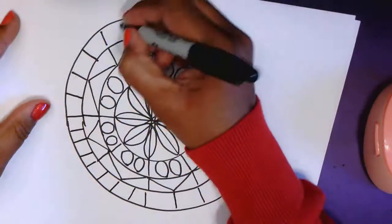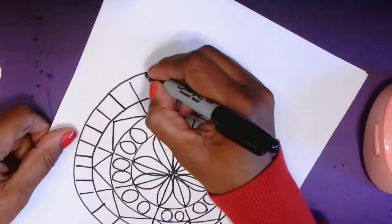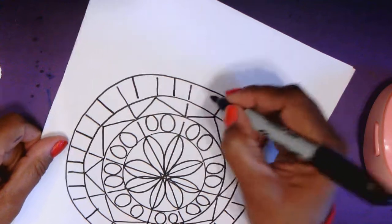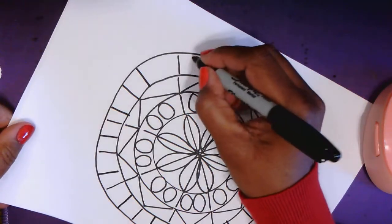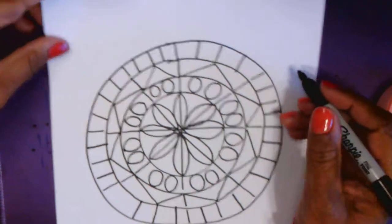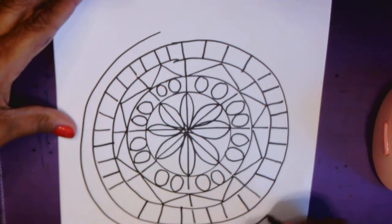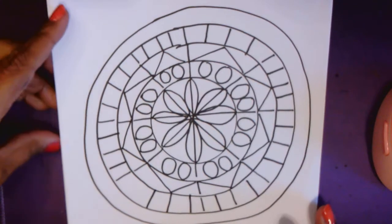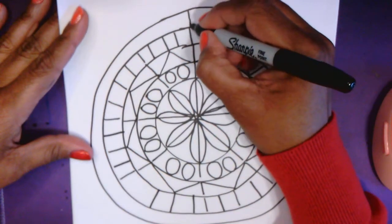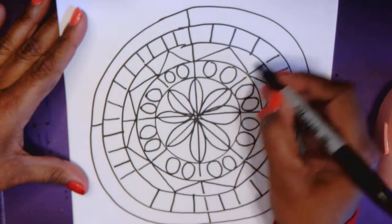Again I'm going to turn my paper. It makes it a little bit easier for me. Okay. Let's see. I think we can make space for one more. Again it's not a perfect circle but it will do for what we're working with. Again those guidelines.